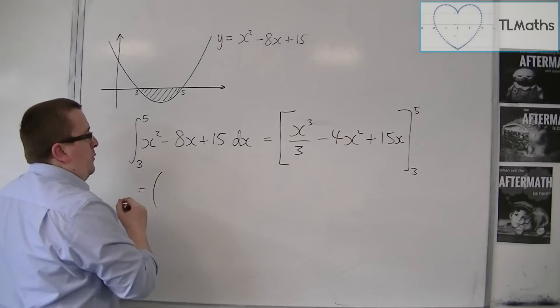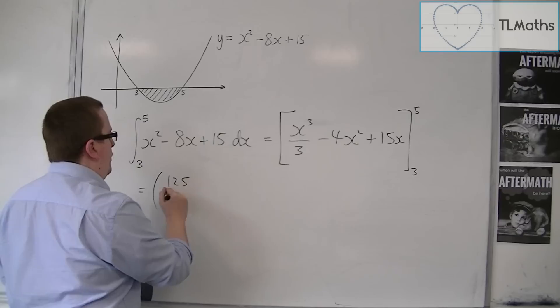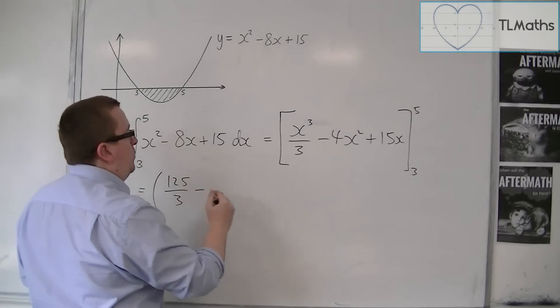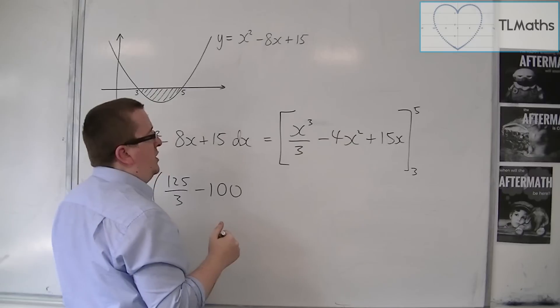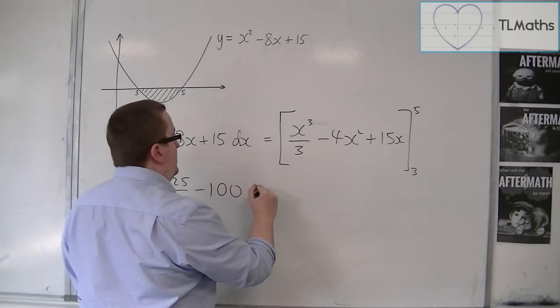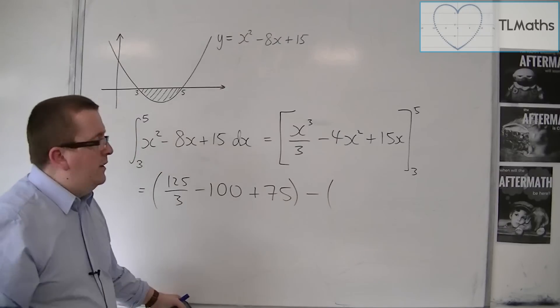So if we substitute in 5, we're going to get 125 over 3, take away 100, plus 15 times 5 is 75. Take away, substituting in 3 now.